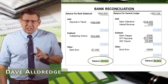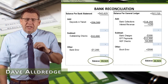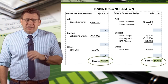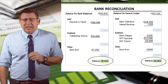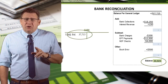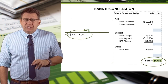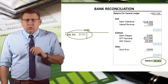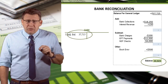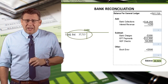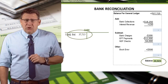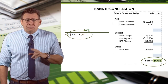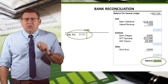Once the bank reconciliation is complete, we have calculated the adjusted cash balance. In this example, we determined that the adjusted cash balance should be $39,925. However, our cash ledger still shows the unadjusted balance. $39,925 is what it should be, but $37,725 is what it is. In order to adjust this account, we will need to record adjusting entries for the items that reconcile the book side.